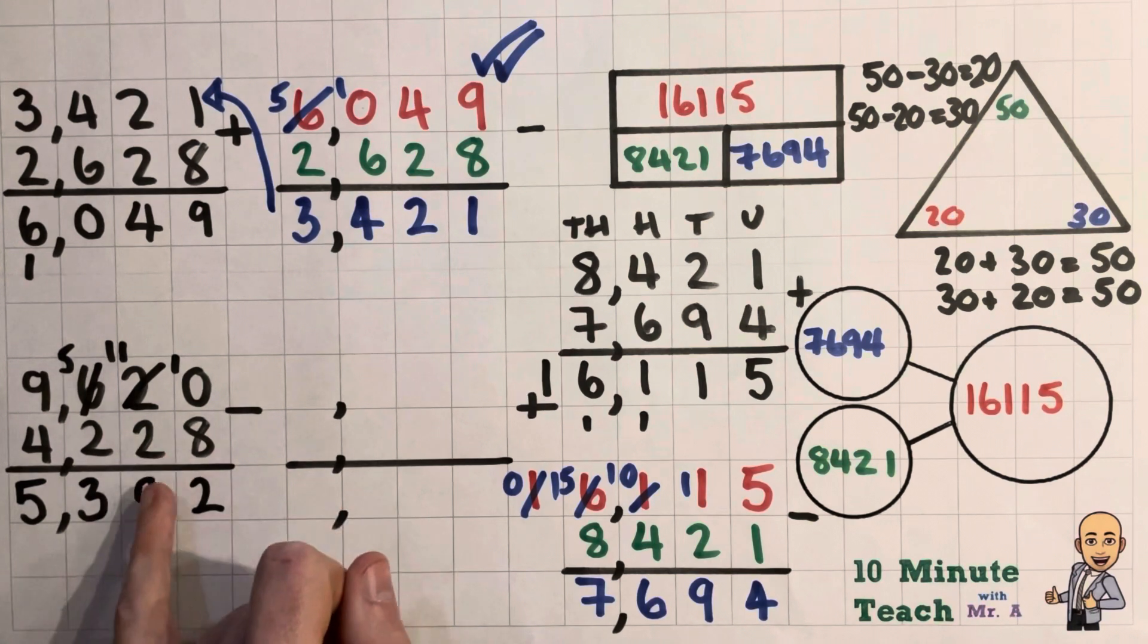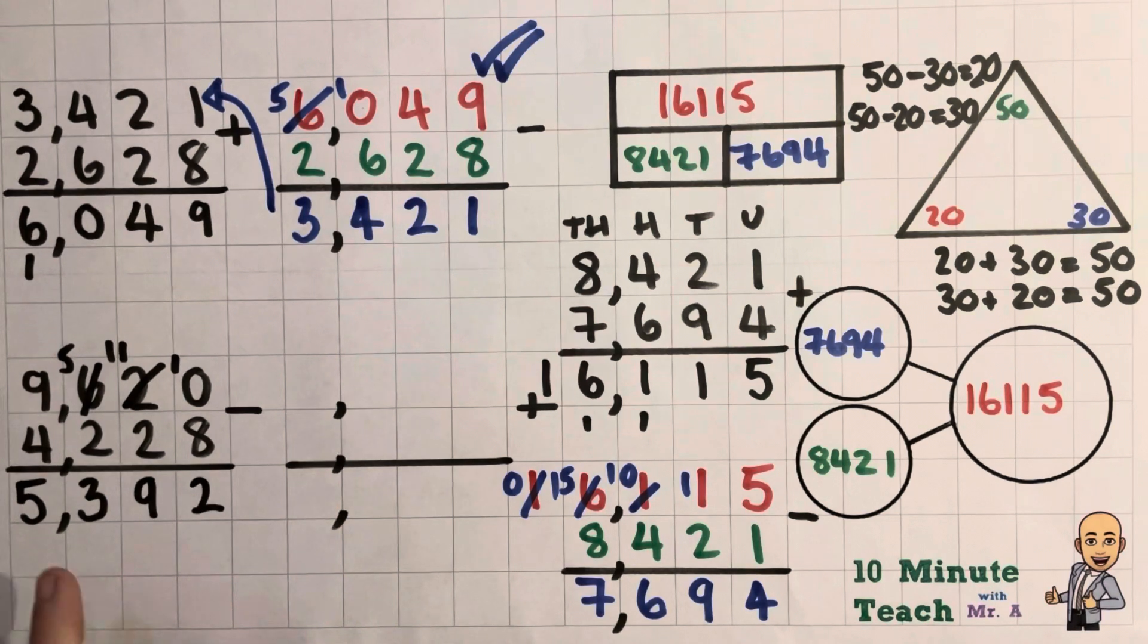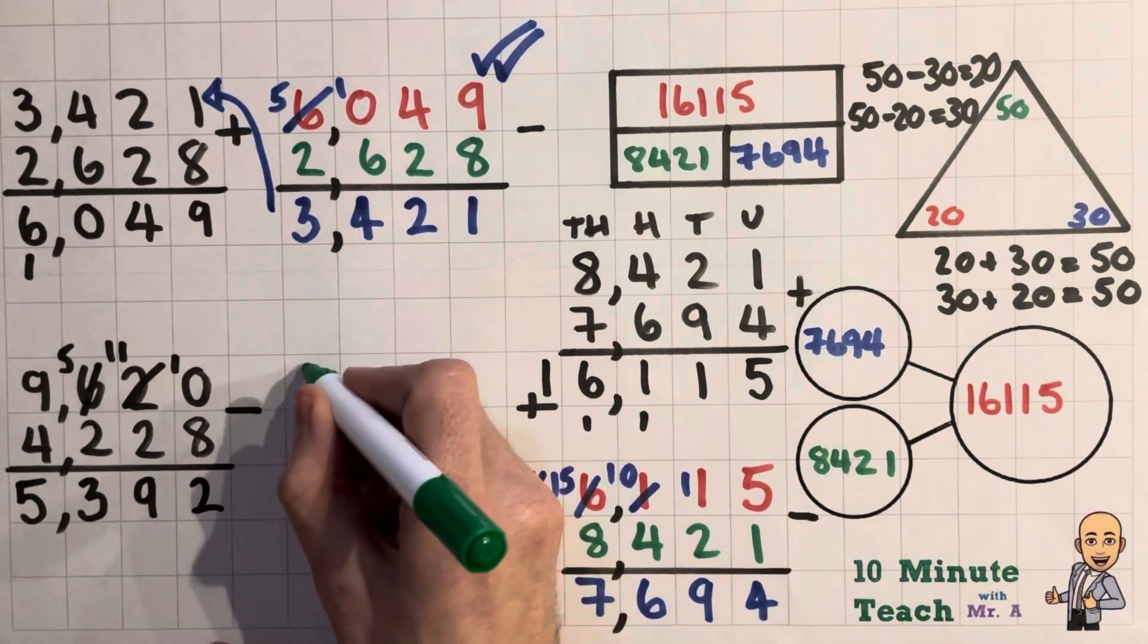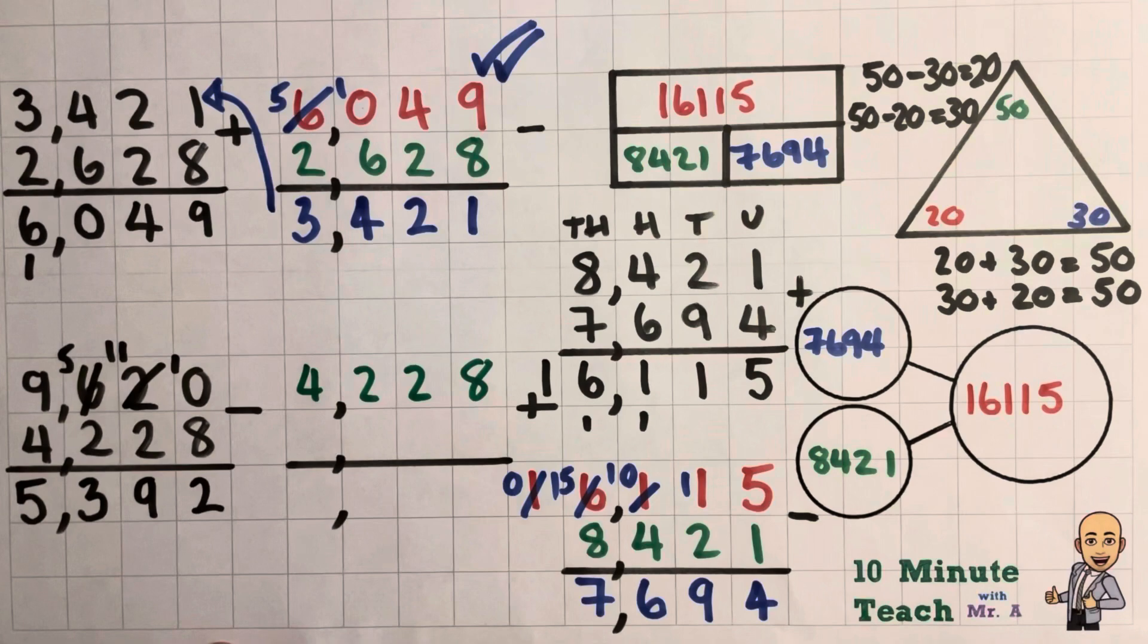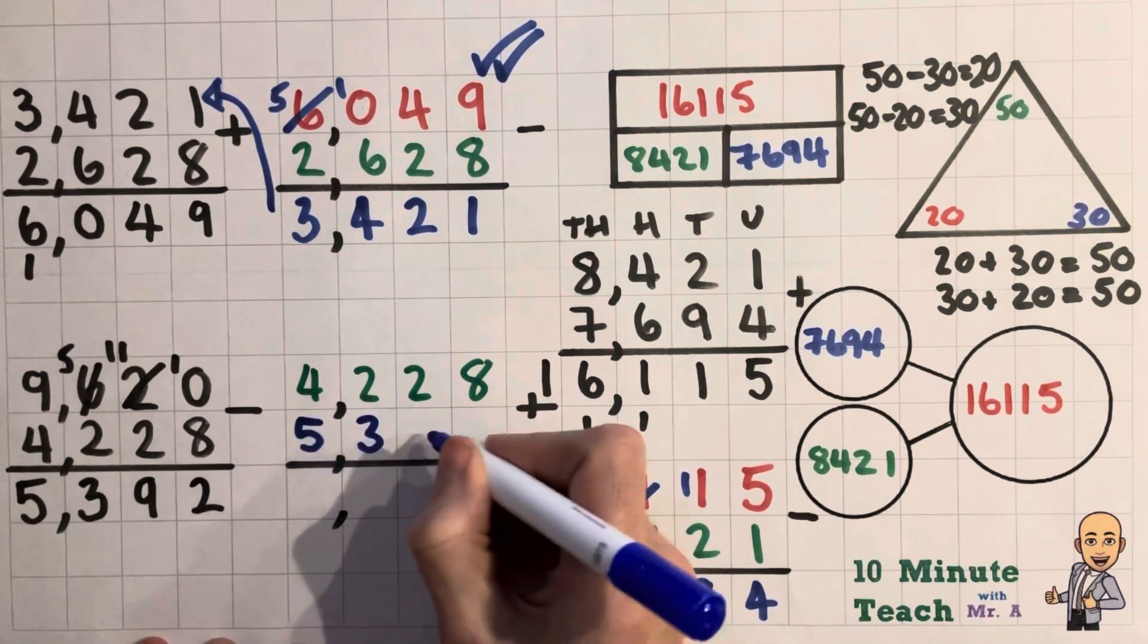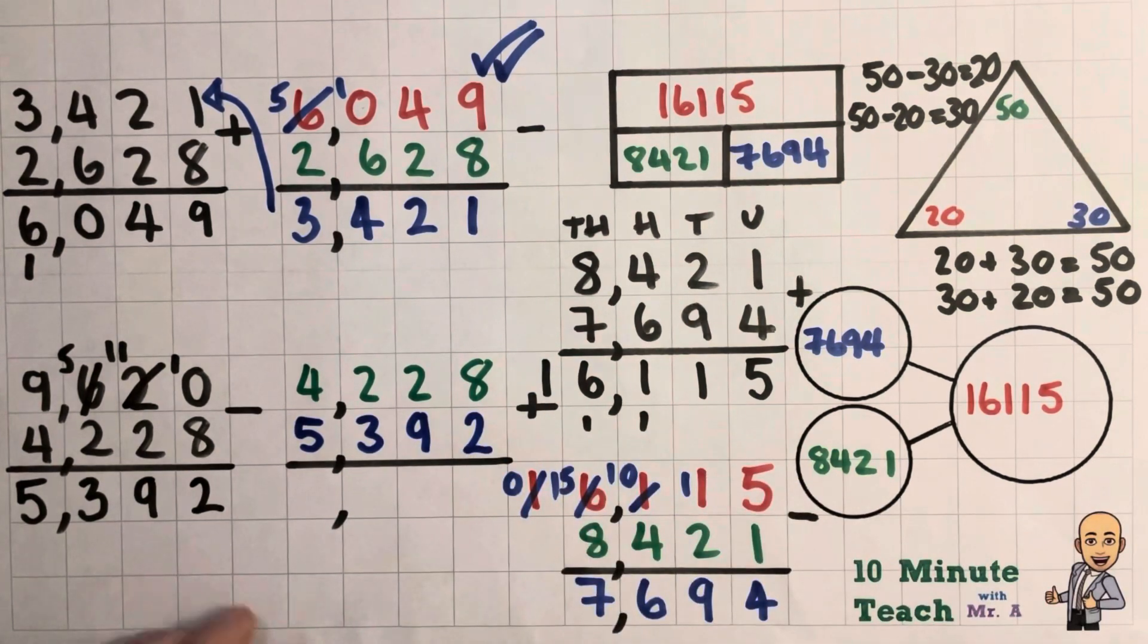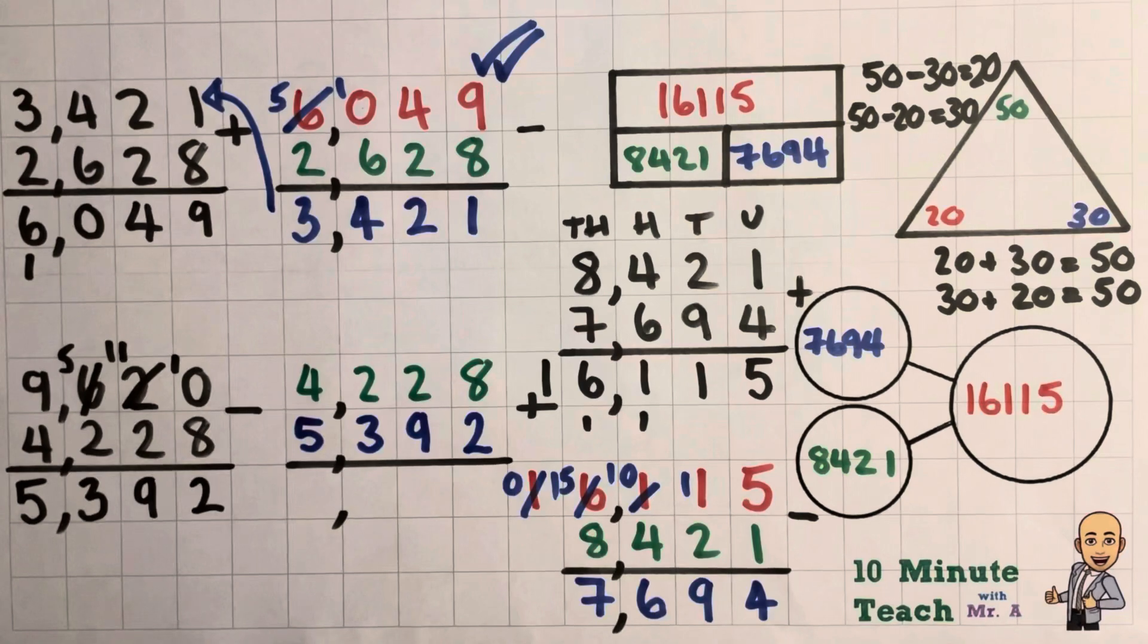So I'm going to know from previous videos, if you've watched them, that it doesn't matter what order you add the numbers in. So let's get started with that. So I'm going to take my 4,228 and I'm going to add it to 5,392. And because I'm adding, I should end up with 9,620. Fingers crossed guys, give me a look. Let's see if I've worked this one out right.